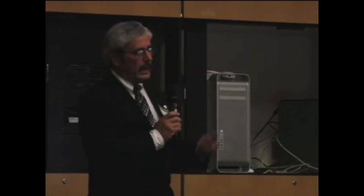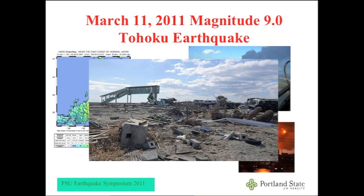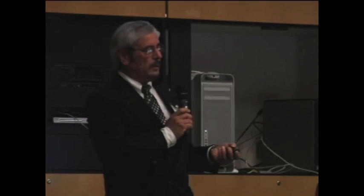Moving toward today, the 2011 Christchurch, New Zealand earthquake was magnitude 6.3, with at least 166 people killed and 240 missing. And of course the Tohoku earthquake, the most recent one that everybody remembers from just this past March. Past earthquakes continue to teach us how to do our job better.